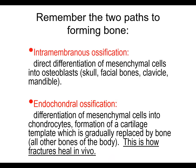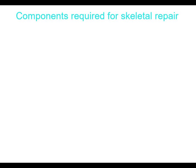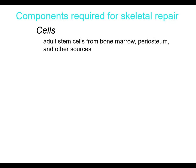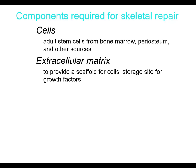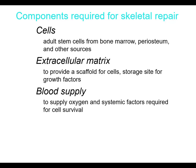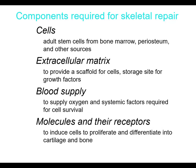As a reminder, there are two paths to forming bone: intramembranous ossification, which doesn't really contribute to fracture healing; and endochondral ossification — similar to the growing child's growth plate, the physis — which is how when you get a fracture you get a cartilage model followed by bone formation through the stages of fracture healing. The components required were: cells from bone marrow, periosteum, and other sources; extracellular matrix to provide a scaffold for cells; blood supply to supply oxygen and other systemic factors; and bone growth molecules and their receptors, like bone morphogenetic proteins, to induce cells to proliferate and differentiate into cartilage and bone.